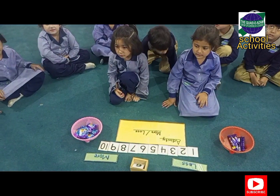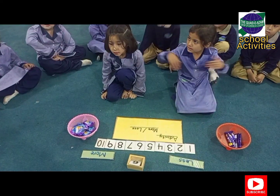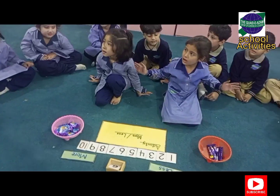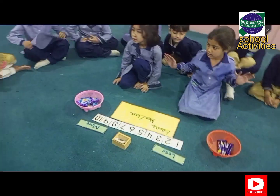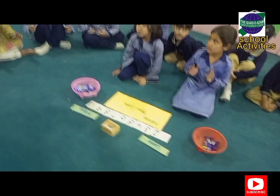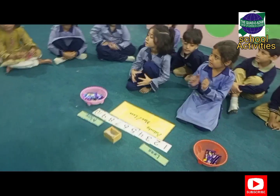More means there are more objects. Less means there are fewer objects. So let's see some objects.